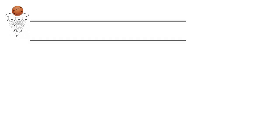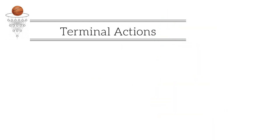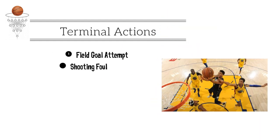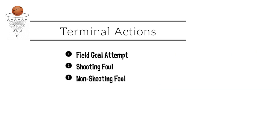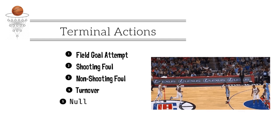We start by defining the actions that can terminate the possession. These include shots made or missed, illegal defense while shooting, non-shooting fouls, turnovers, or nothing — meaning the possession is still in progress.